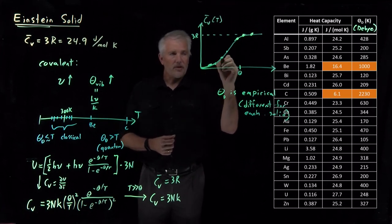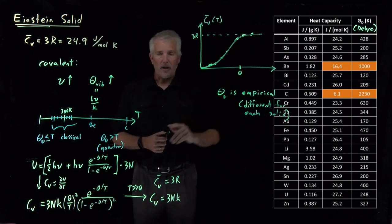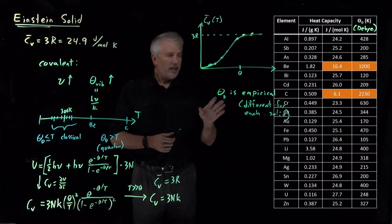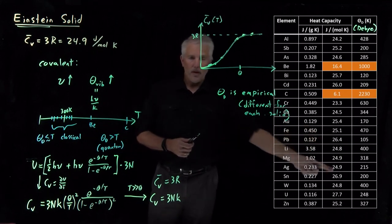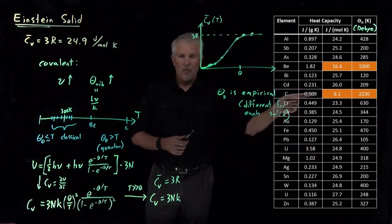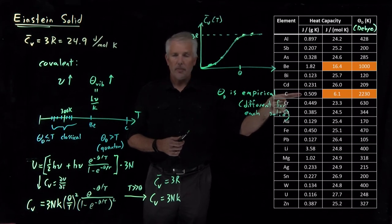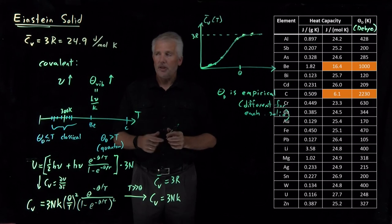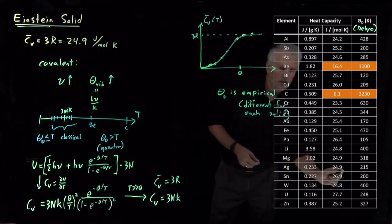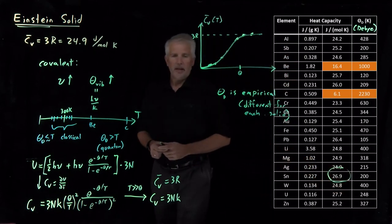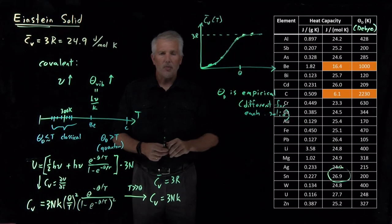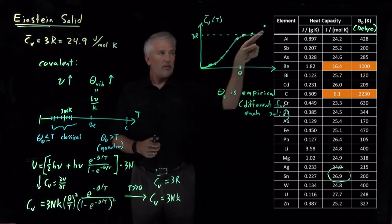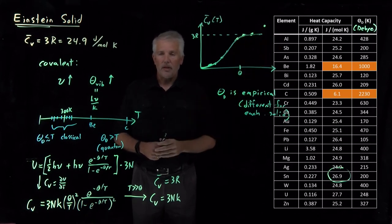Most solids are in the Equipartition limit near 24.9, and those not yet hot enough relative to their Debye temperature are lower than expected. But notice there are a few — tin, for example, at 26.9 — that are quite a bit larger than the Equipartition limit. Nothing discussed so far allows us to understand how a metal could have a heat capacity larger than 3R. That seems to indicate there's something we don't yet understand, and that's exactly what we'll explore next.